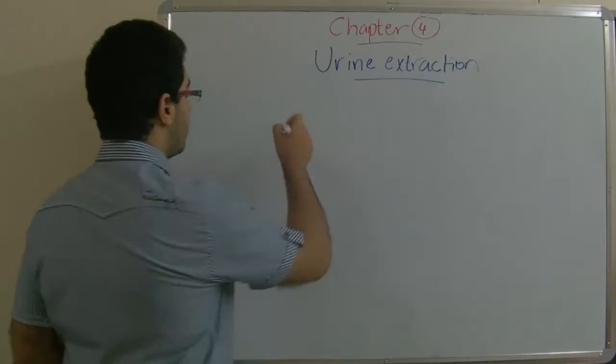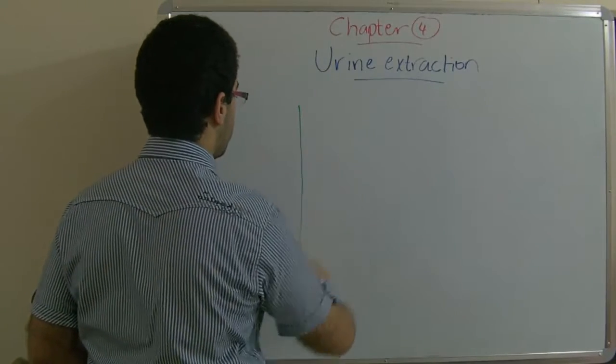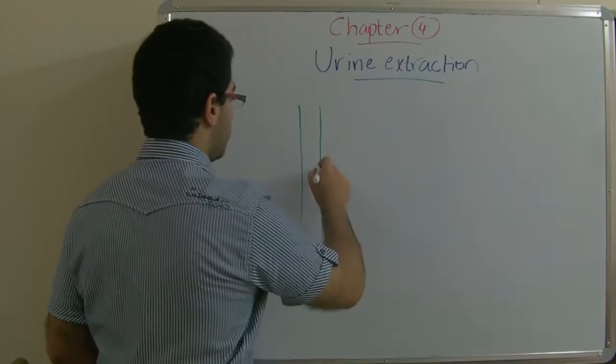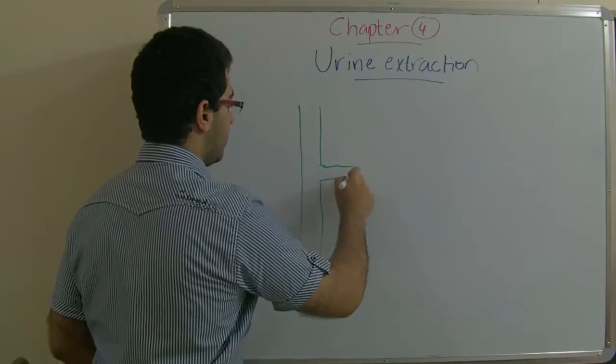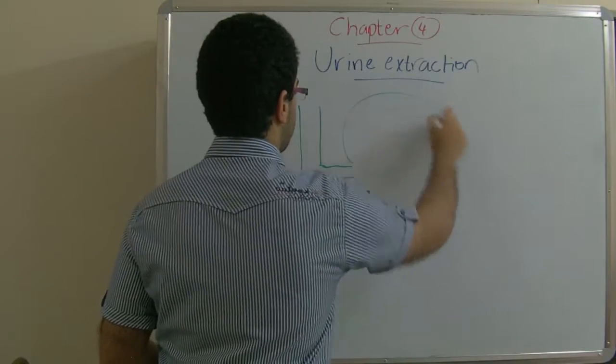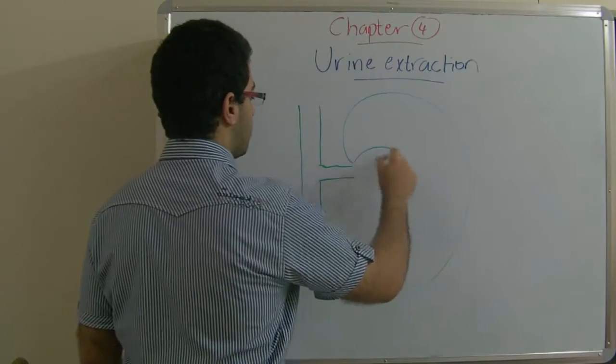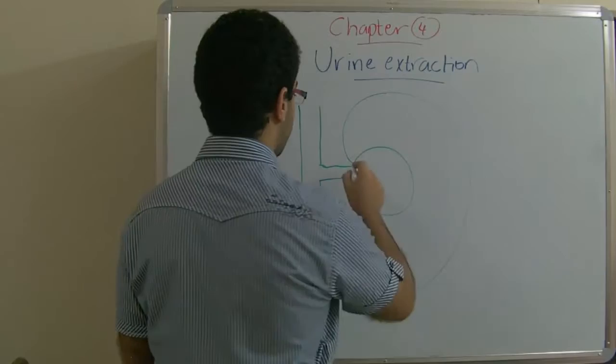We said that there is a renal artery which comes from the aorta and it enters the kidney at its concave surface. In this place, here.